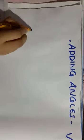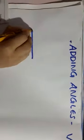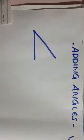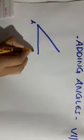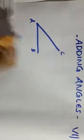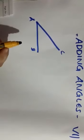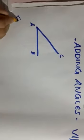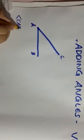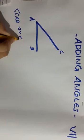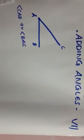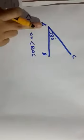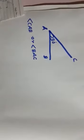Now I am going to draw an angle. We can give a name for this angle. This is A, B, C. You know what is the name of this angle. This angle is angle CAB or angle BAC. I will give the measure of this angle as 30 degrees. So, angle CAB is equal to 30 degrees.